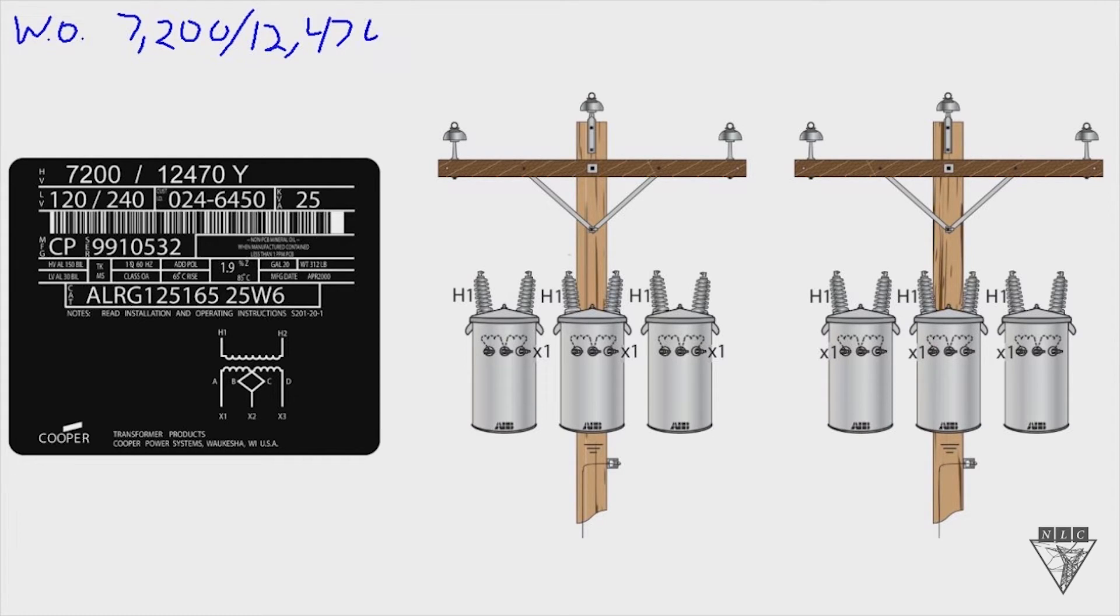And then we're going to say that our service voltage is 120/240 that the customer needs and they're requiring three 25 kVA transformers. So this would be on our work order and these are parts of the equation that we need.